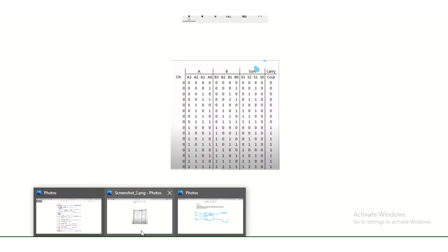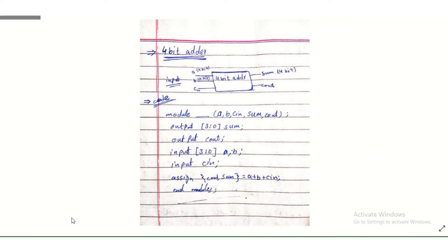Now, in the 4-bit adder, it has inputs A, B, and C-in. A and B are 4-bit inputs — A is equal to 4-bit input, B is equal to 4-bit input — and the sum output will also be 4-bit. Carry-in is 1-bit and C-out is also 1-bit.